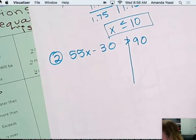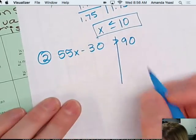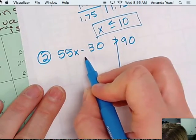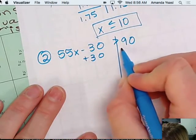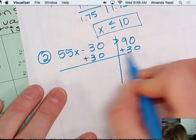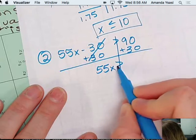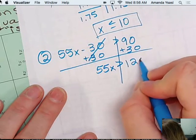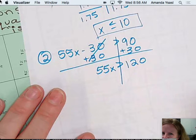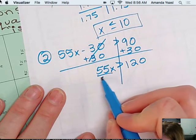Okay, so we need to solve it out. What's 30? So 55X greater than 120 divided by 55.